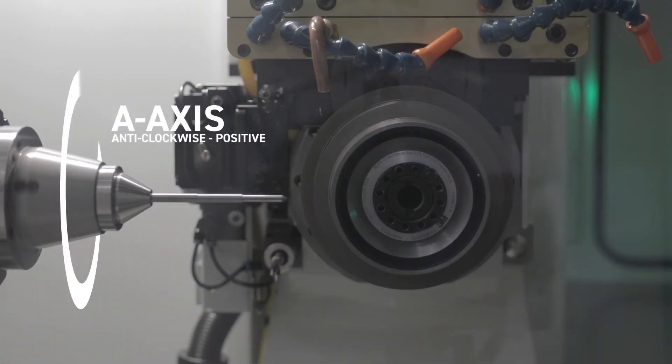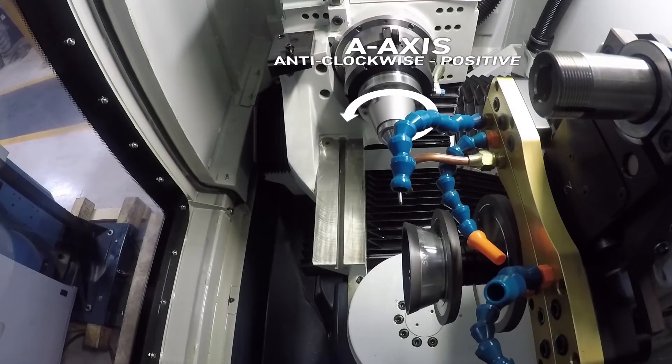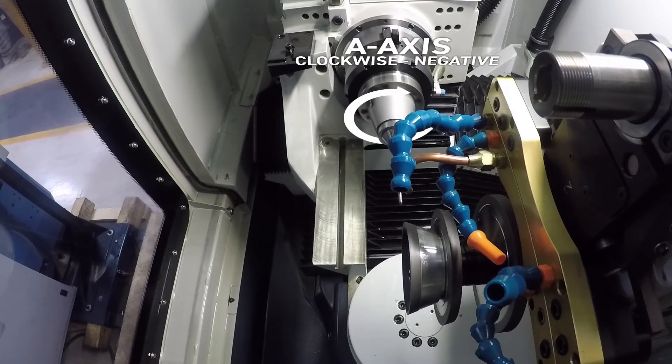The a and c-axis are the rotary axes. The a-axis rotates the tool. Rotating anti-clockwise is positive and clockwise is negative.